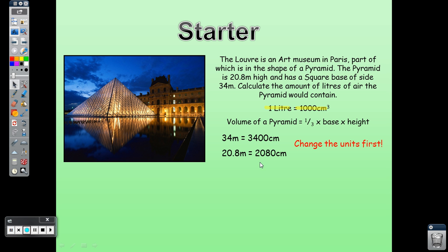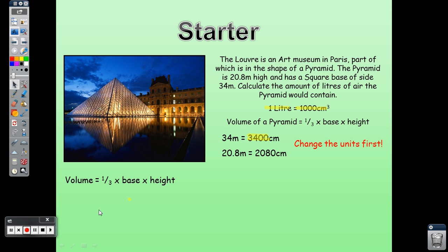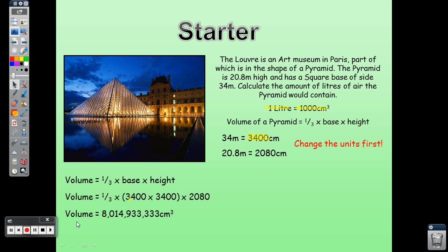Once we get the answer in cm³, we divide by 1000 to convert to liters. So: 34 meters = 3400 cm, 20.8 meters = 2080 cm. Volume = (1/3) × base area × height = (1/3) × 3400 × 3400 × 2080. When you calculate this, you get a large number in cm³.